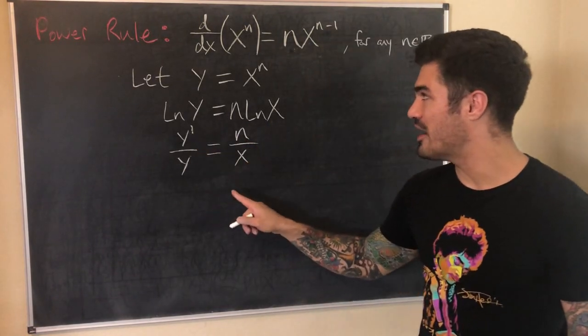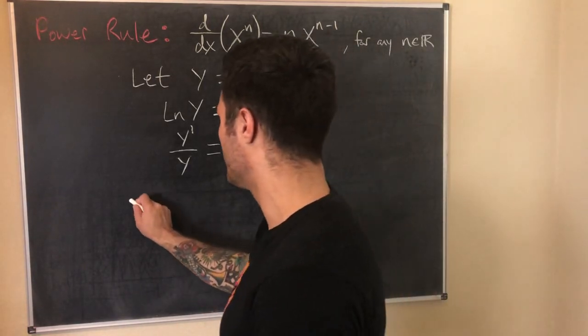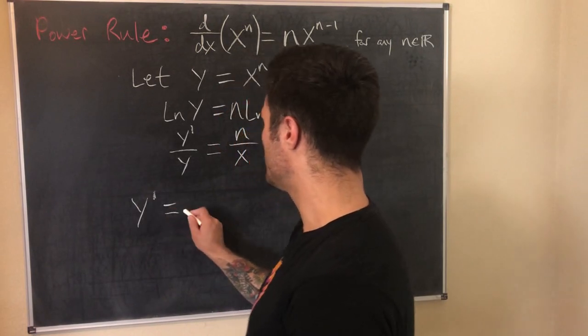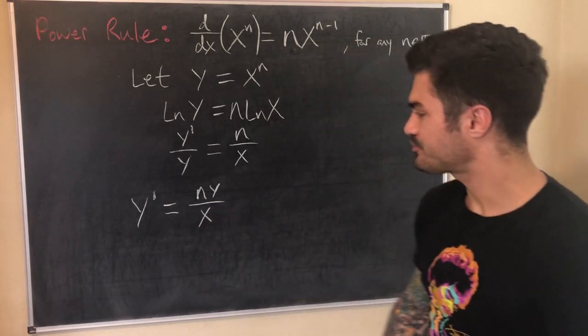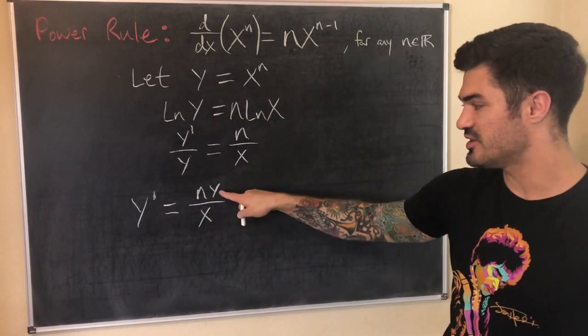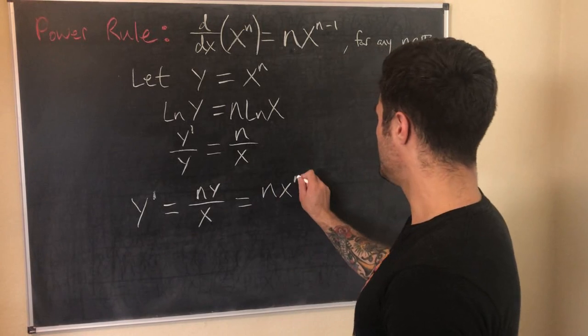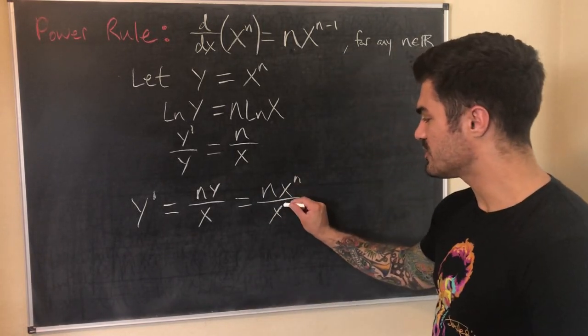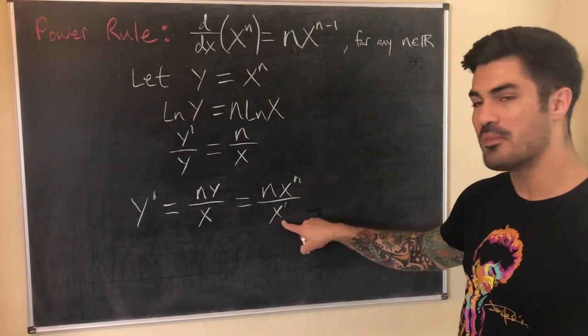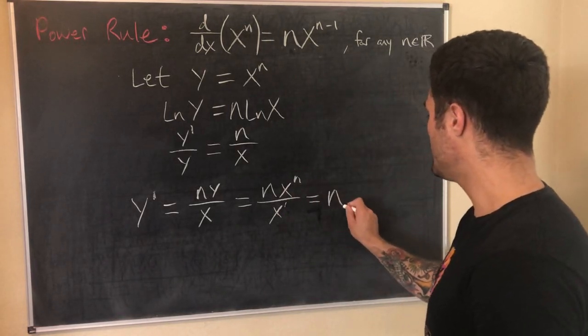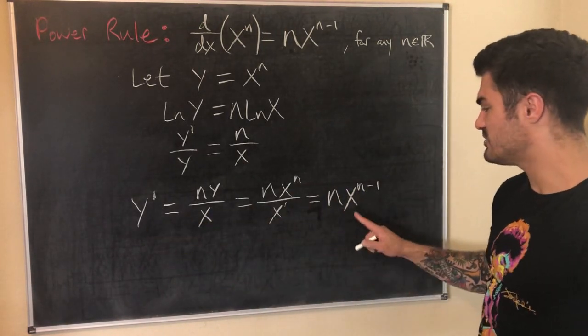And now remember, what we want to show is that y' equals n times x to the n minus 1. So it makes sense to solve for y'. So really what I'm doing is taking this equation and multiplying both sides by y. That's n times y over x. Now y equals x^n. So let's replace y. Let's do a substitution and replace y with x^n. We can use our exponent rules because down here what we really have is an x to the first power. So we have the same base. So what we can do is do top exponent minus bottom exponent. So that equals n times x to the n minus 1.